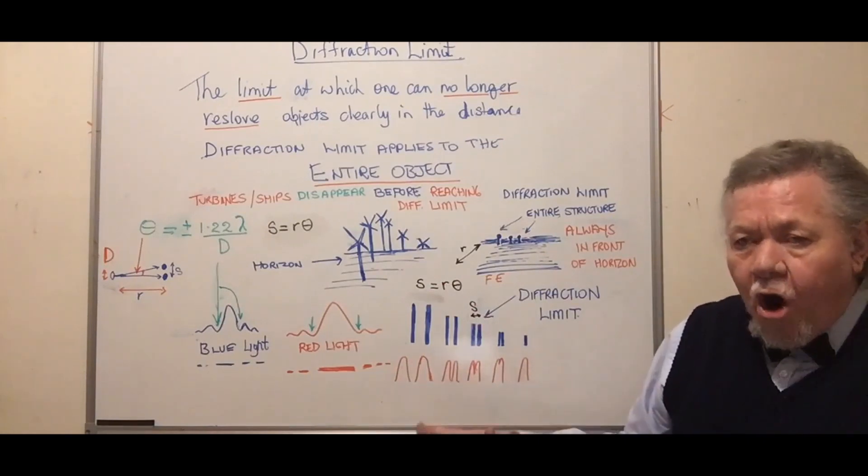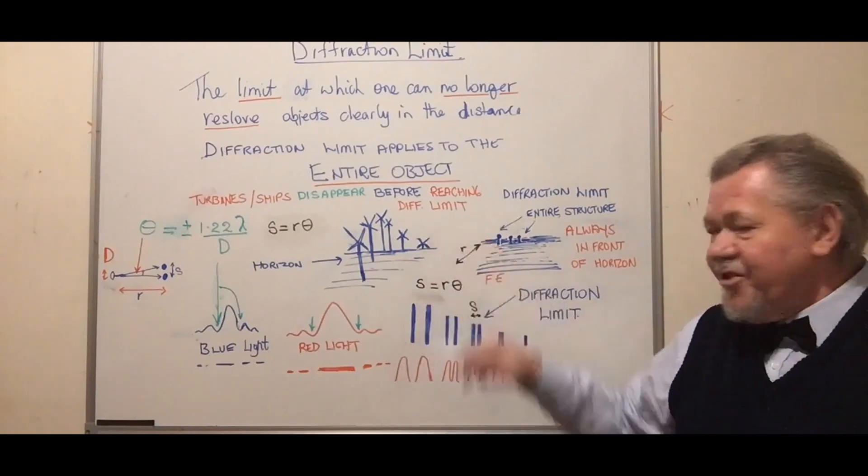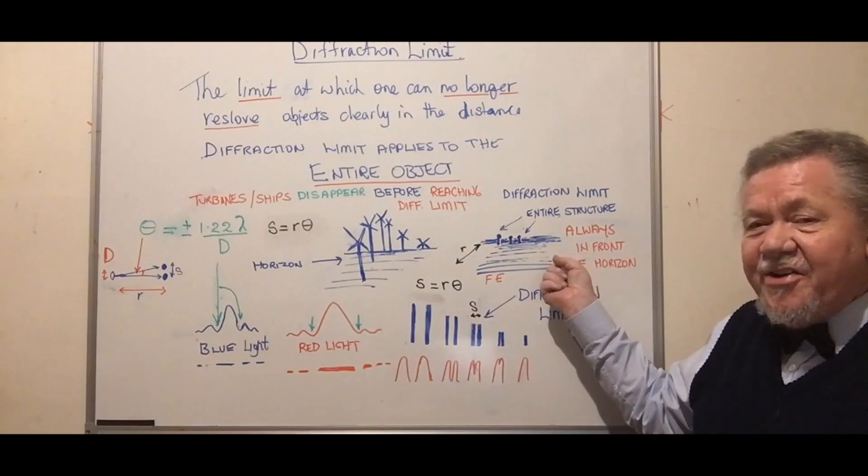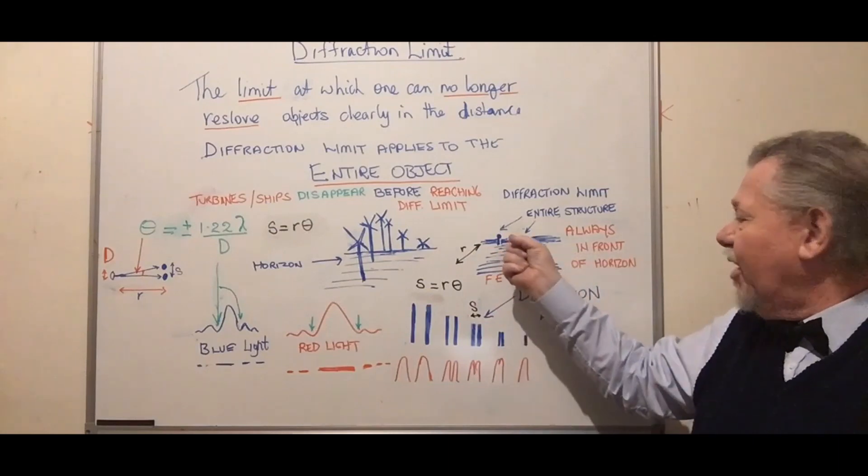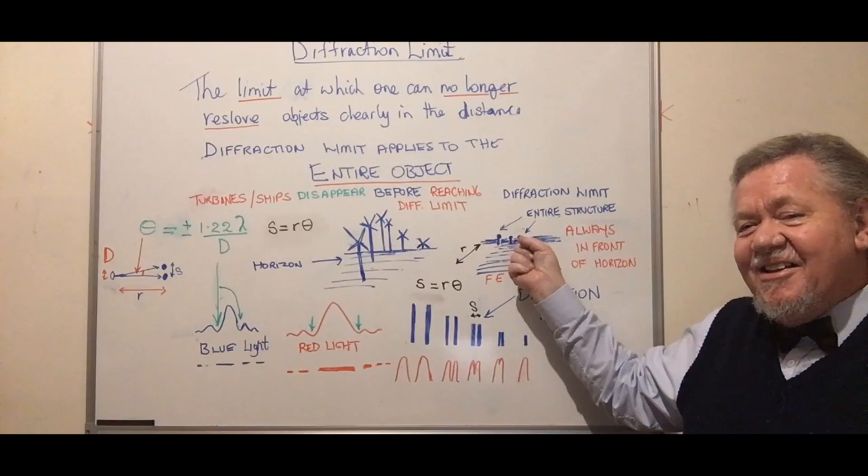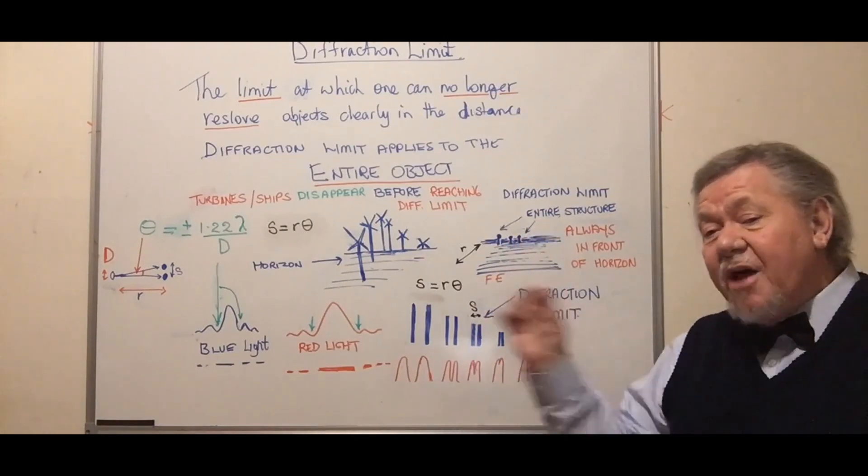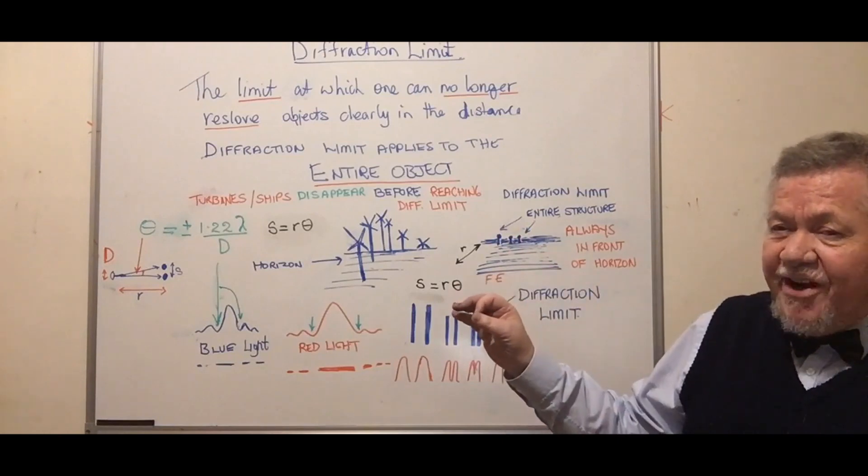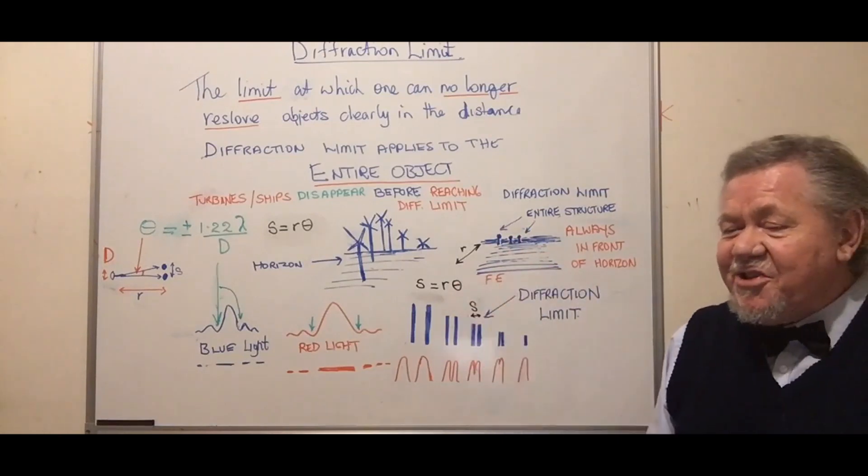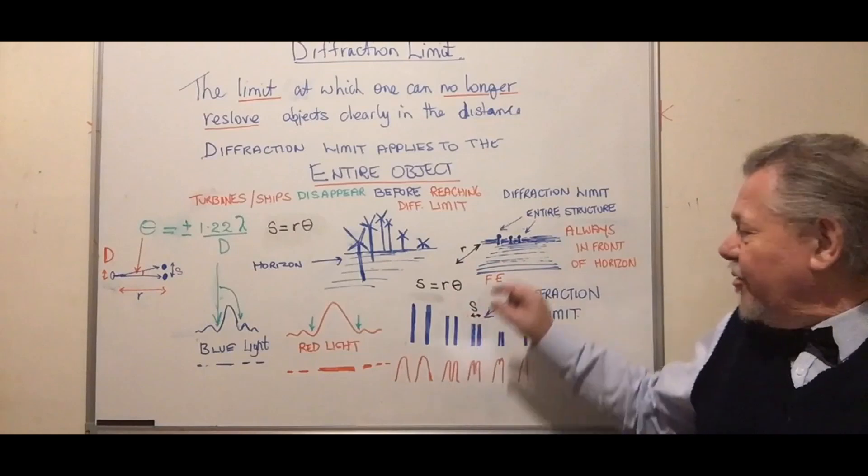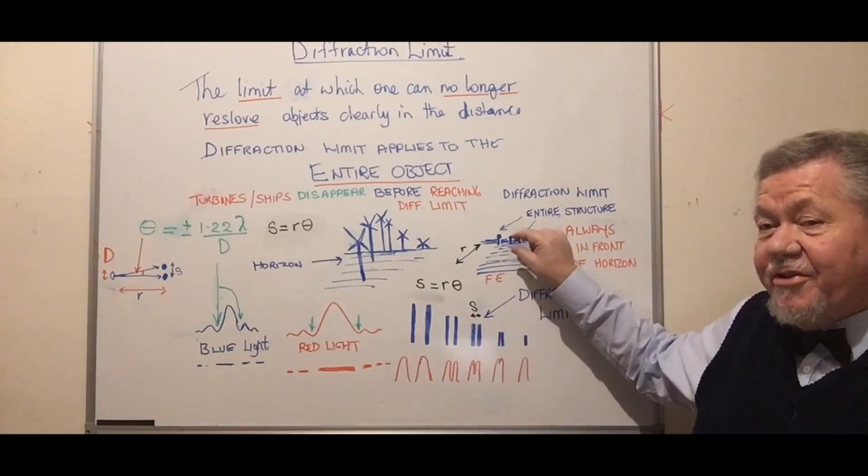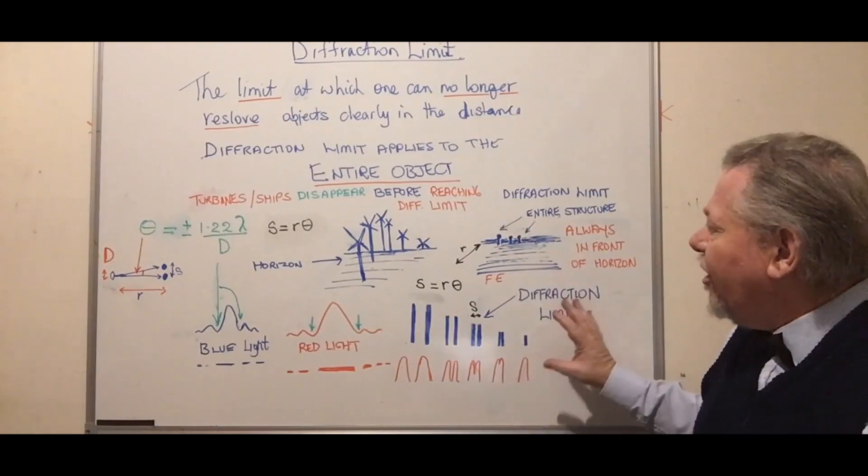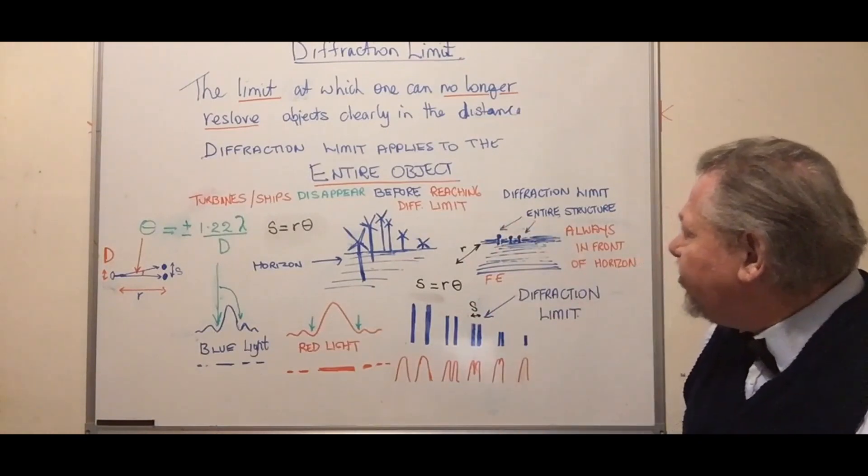This is long before it reaches the diffraction limit. On a flat earth, it would just keep going into the distance and we'd still see it - the entire structure. We wouldn't be able to make out what it is if it's beyond the diffraction limit, but we'd see all of it, from top to bottom, squished but visible. That covers all of this.